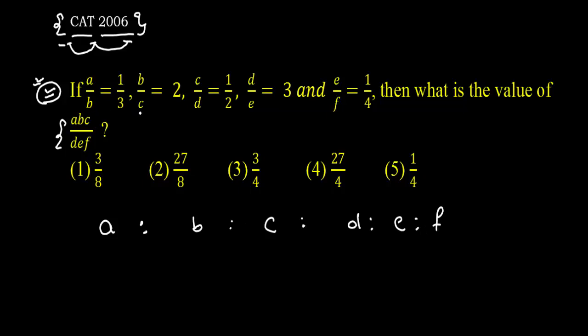The best way of finding the ratio if we have more than 3 ratios is assume A is 1, B is nothing but 3. Take the first ratio as it is. Now we have 3. So put 3 in the second place. That is 3 by C is equal to 2. So can we say C is nothing but 3 by 2.